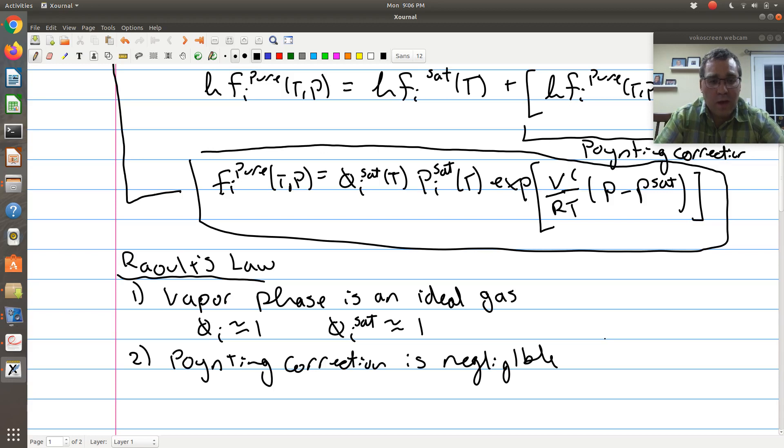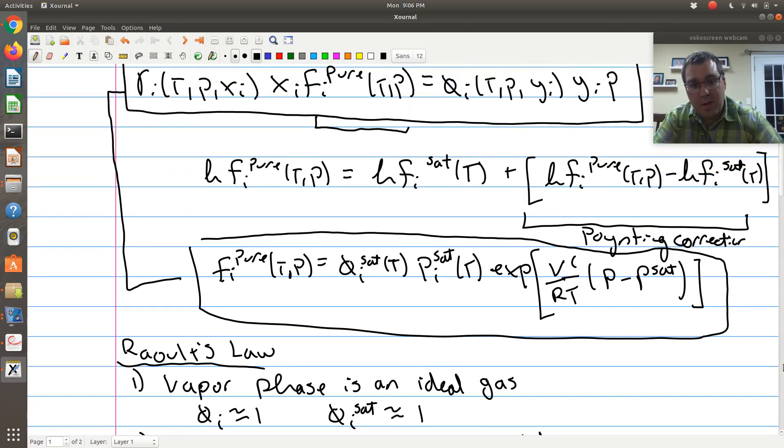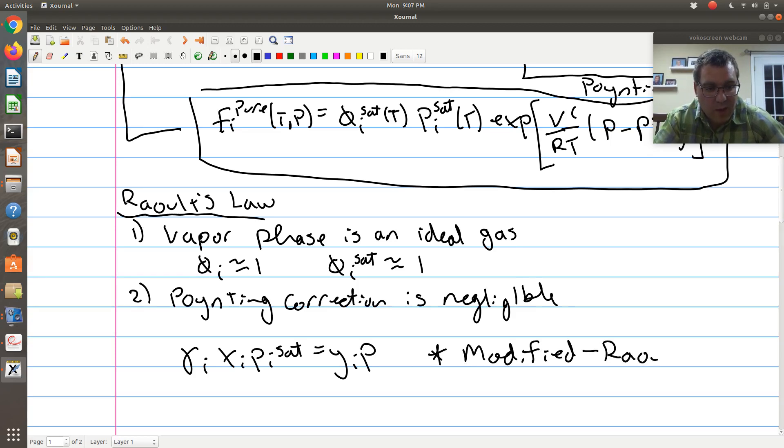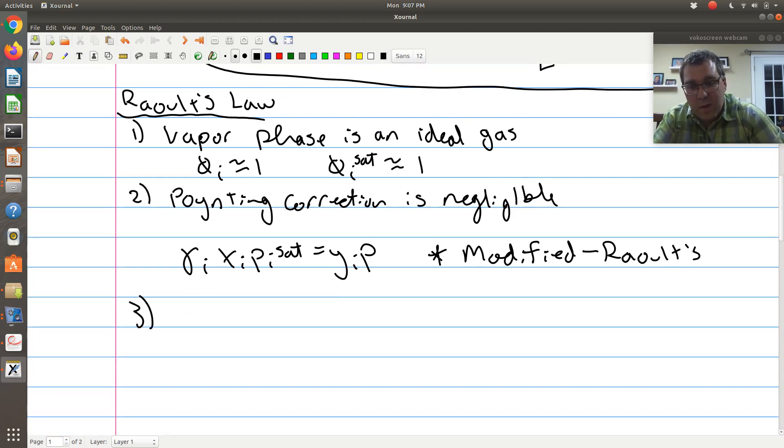The most common place you would encounter a Poynting correction is if you're dealing with supercritical CO2 or supercritical fluids, supercritical water, things at extremely high pressures. But in general, it's reasonable to assume your Poynting correction is negligible, at which point this term in brackets would go away. If I were to plug in F_I^pure up above, F_I^pure now is just P_I^sat, and what we're left with is gamma_i times x_i times P_i^sat equals y_i times P. This actually gets the special name of Modified Raoult's Law.